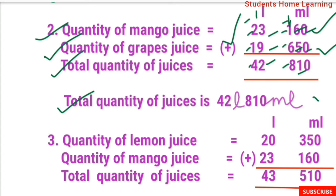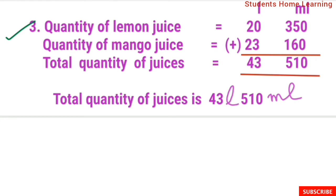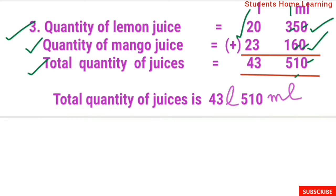Third: lemon juice 20L 350ml plus mango juice 23L 160ml. Adding milliliter: 0 plus 0 is 0, 5 plus 6 is 11, carry 1, 1 plus 3 is 4, 4 plus 1 is 5. Liter: 0 plus 3 is 3, 2 plus 2 is 4. Total quantity is 43L 510ml.